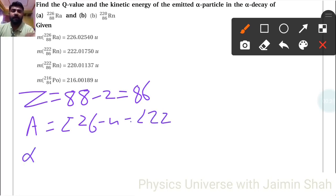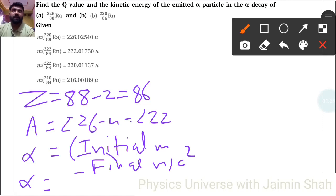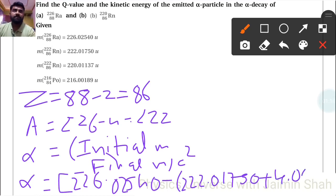For the alpha energy, we write initial mass minus final mass times C squared. So alpha energy equals 226.02540 minus 222.01750 plus 4.002063, all times C squared.